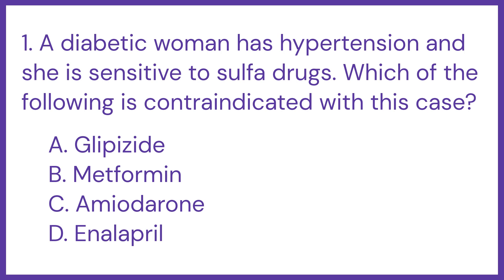A diabetic woman has hypertension and she is sensitive to sulfa compounds. Which of the following medicines is contraindicated in this case? A. Glipizide, B. Metformin, C. Amiodarone, D. Enalapril.